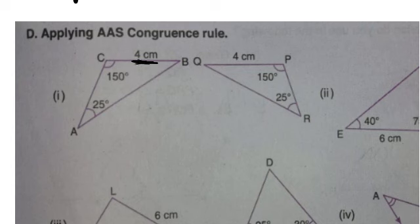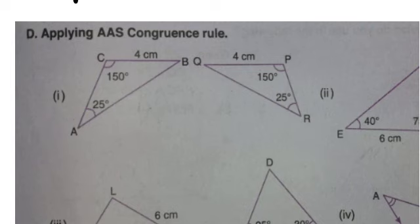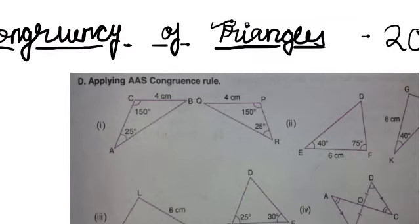Whereas in the ASA method — Angle, Side, Angle — that four centimeter side would not be opposite but instead given between the two angles. When two angles and the side between them is given, that is ASA. But here the side is opposite to both angles, so this is AAS — the Angle Angle Side rule.